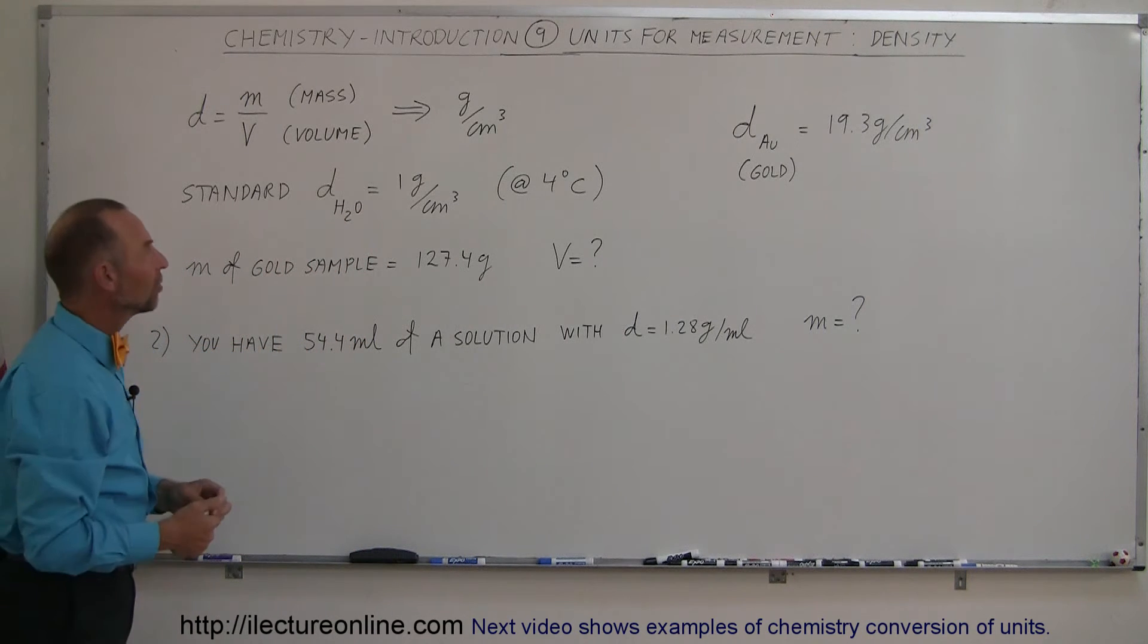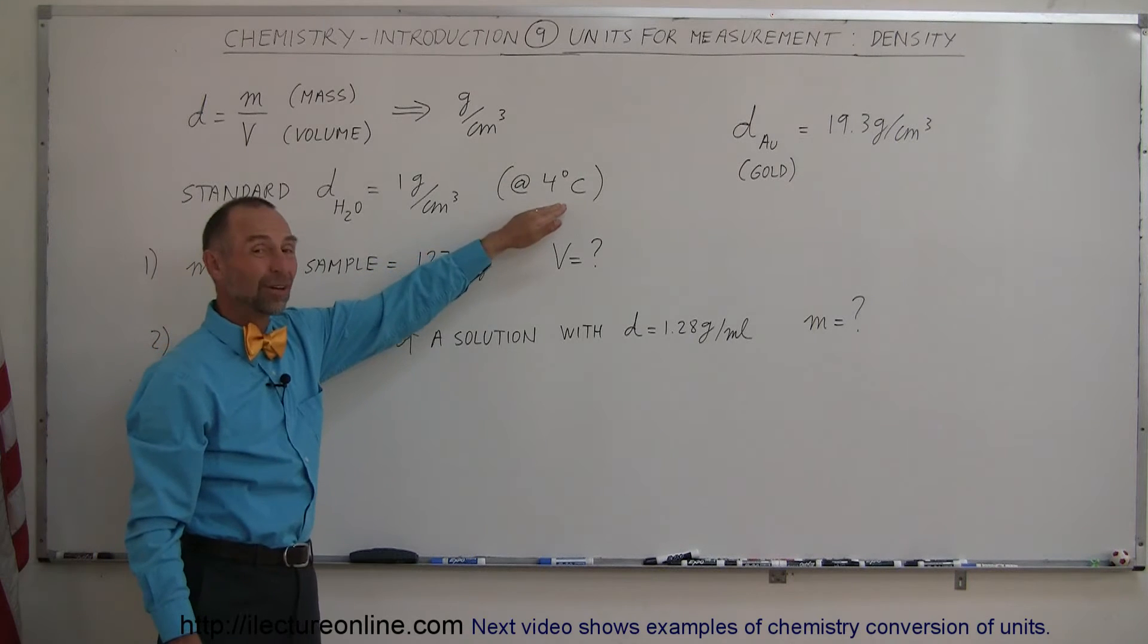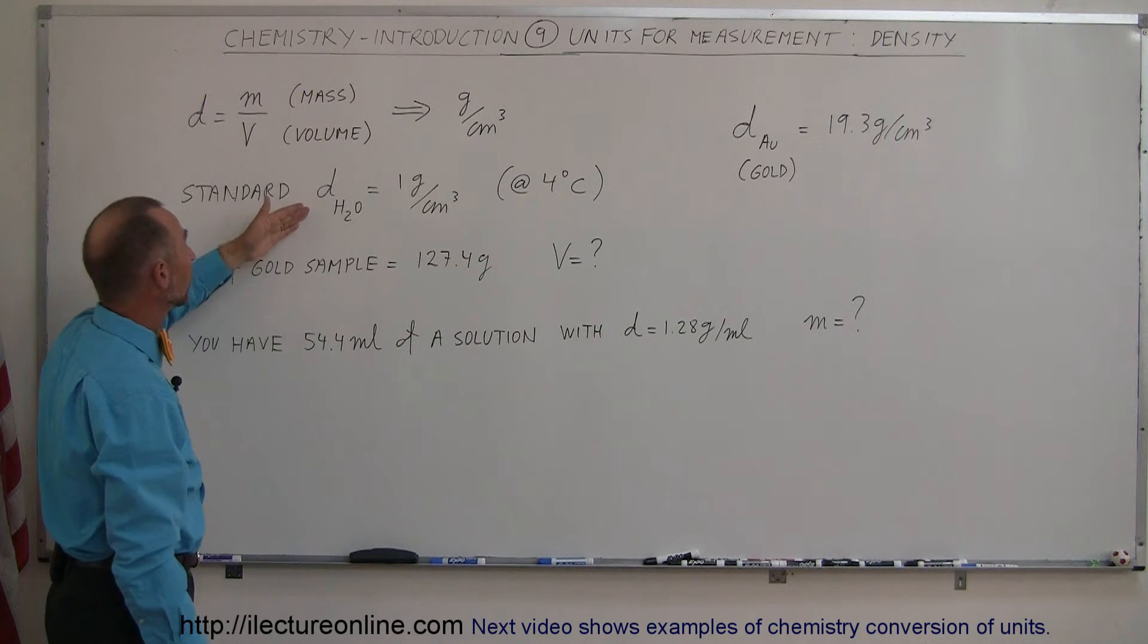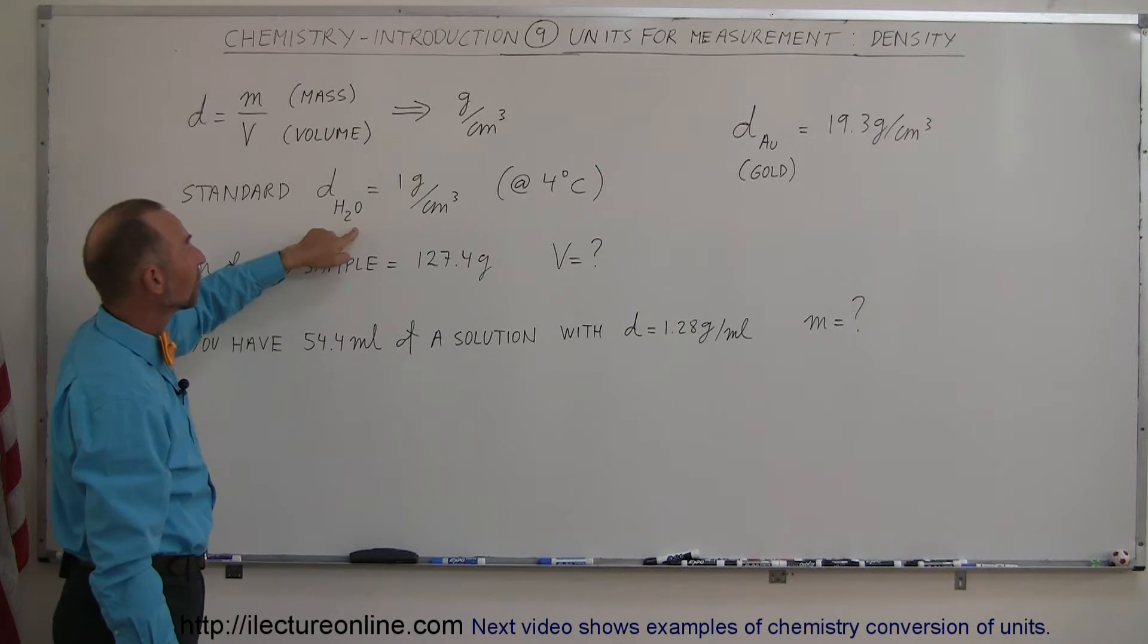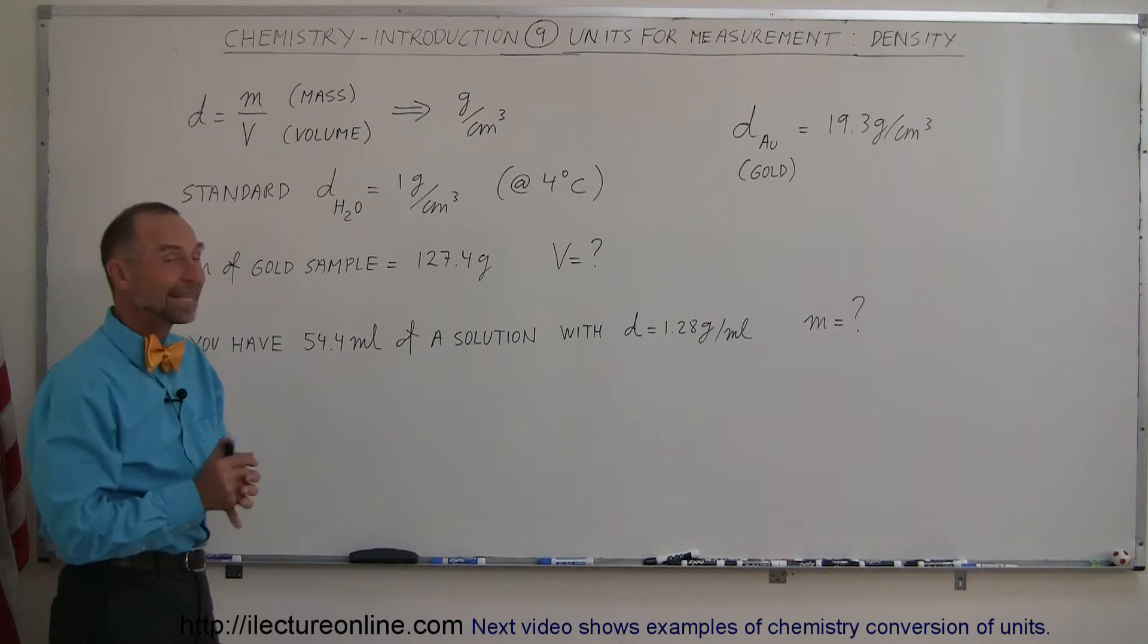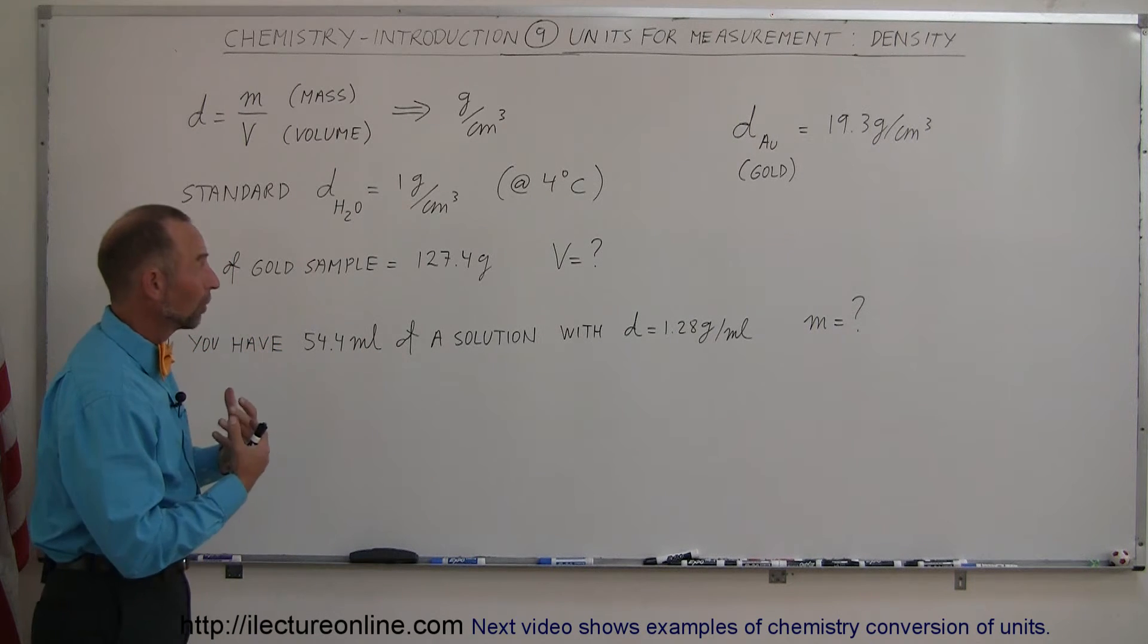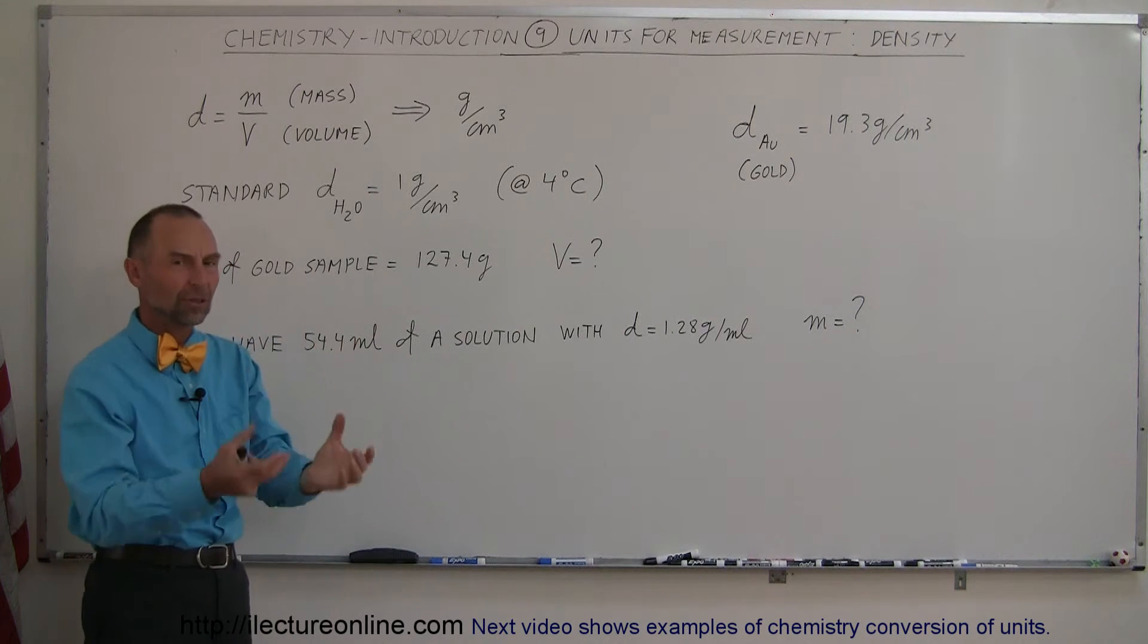The standard for density is the density of water at 4 degrees Celsius, which by definition is exactly 1 gram per cubic centimeter. We tend to compare everything to it. Anything less dense than water can float, while anything with a larger density than water will sink to the bottom.